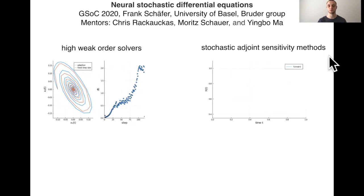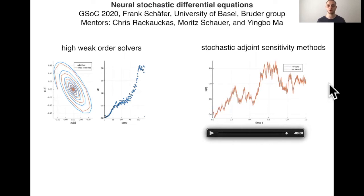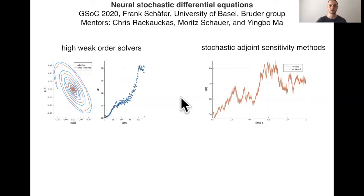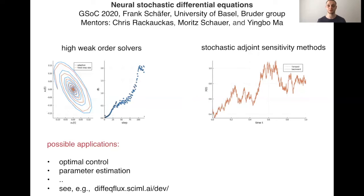The new tools also include stochastic adjoint sensitivity methods, which allow computing gradients very efficiently. They consist of two stages: first, you simulate the stochastic equation forward, starting from some initial state to simulate a trajectory. Then, starting from the final state, you solve another augmented stochastic differential equation backwards in time, following the forward evolution, such that you end up with the initial state of the forward evolution. We believe both methods will be very important in many applications, such as optimal control or parameter estimation. If you have any questions about the new tools or simply want to discuss, please don't hesitate to get in touch.